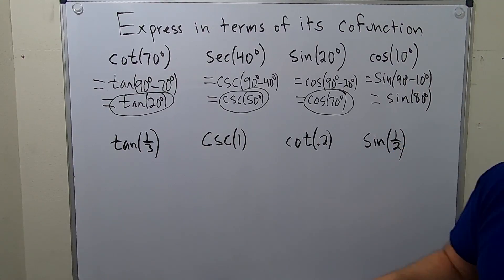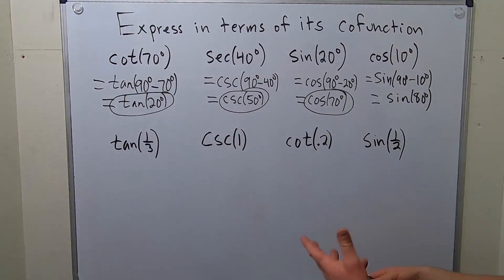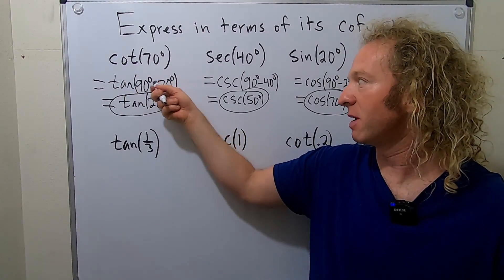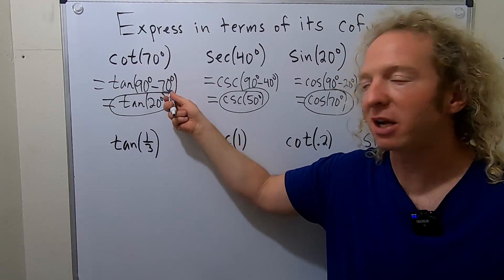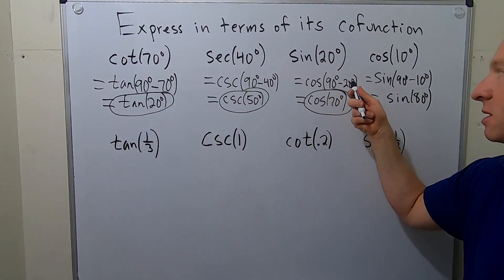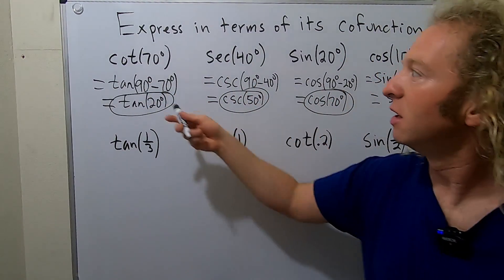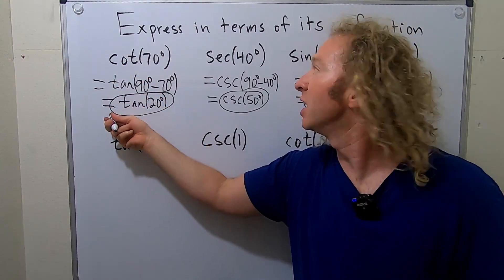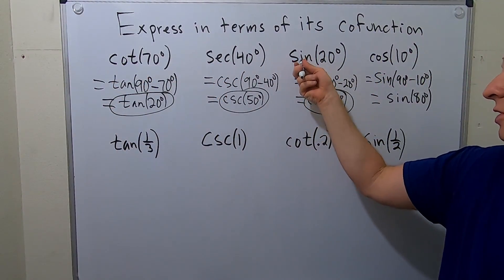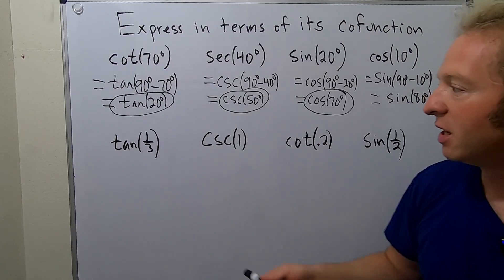Let's recap all of these one more time. Cotangent — its co-function is tangent, so it's 90 minus the angle. Notice it's always 90 minus the angle for all of these. Then: cotangent's co-function is tangent, secant's co-function is cosecant, sine's co-function is cosine, cosine's co-function is sine.